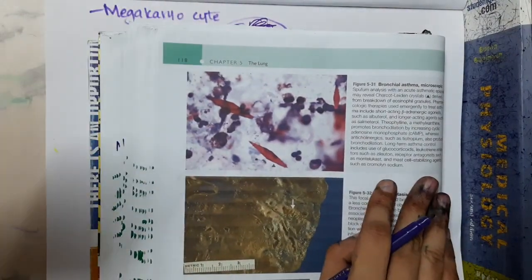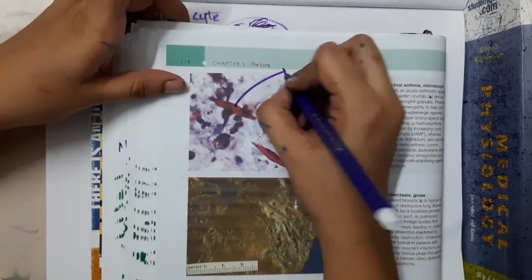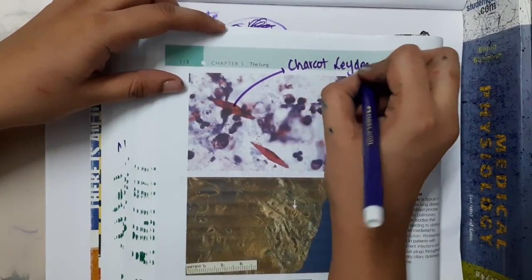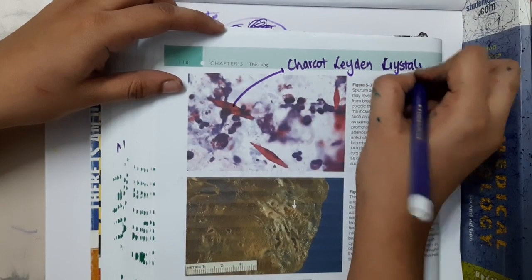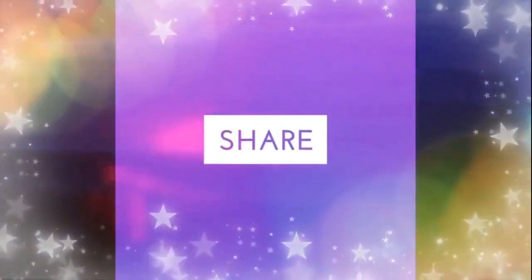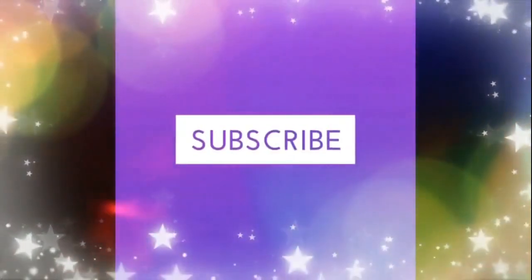In bronchial asthma, the characteristic feature is the presence of Charcot-Leyden crystals. So these are the Charcot-Leyden crystals which are seen in patients with bronchial asthma. Thank you for watching.